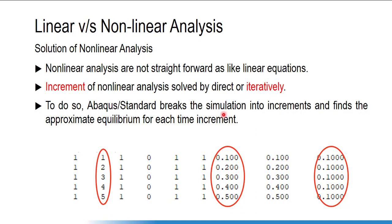Here you can see the increments made by Abaqus Standard, each with a step size of 0.1. If the solution converges, it will not reduce the step size. Assuming the simulation is 4.5 seconds and completes within five increments, there are no further increments needed because the simulation converges in each increment with only one iteration. These are your iterations.